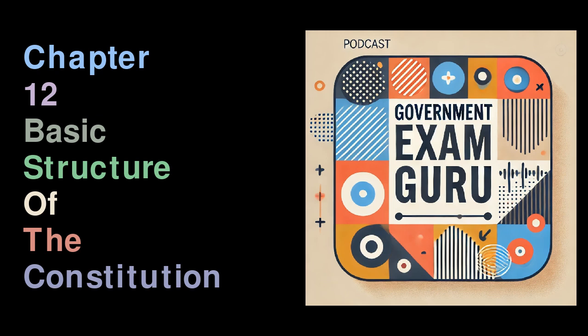The parliamentary system of governance means that the executive branch is drawn from the legislature, allowing greater accountability. The rule of law states that the law applies equally to everyone and no one is above the law, ensuring fairness and justice. A harmony and balance between fundamental rights and directive principles is essential: fundamental rights protect individual freedoms, while directive principles set out goals for social and economic justice. The principle of equality ensures that all citizens are treated equally before the law, with no discrimination based on religion, race, caste, or sex.